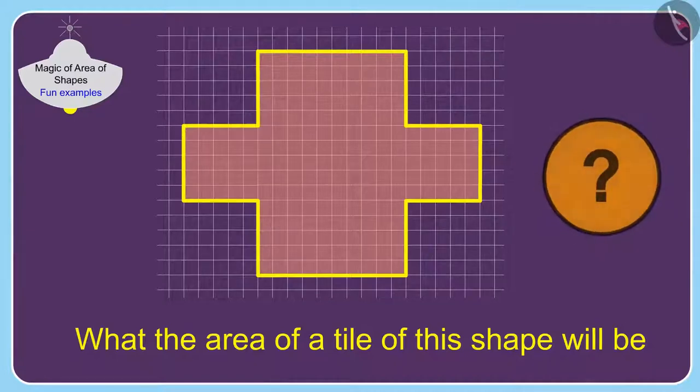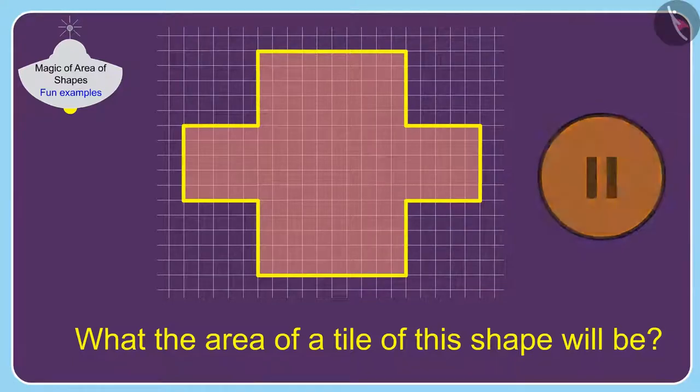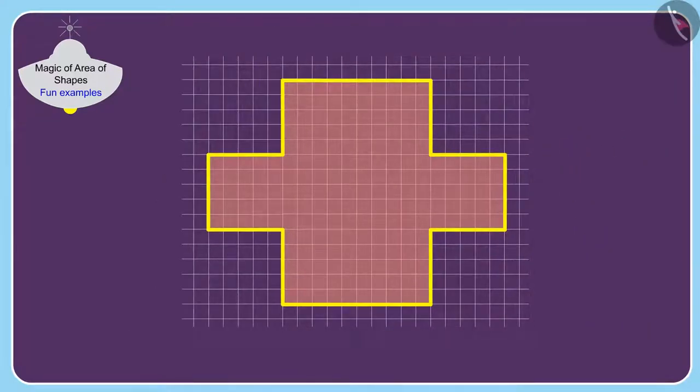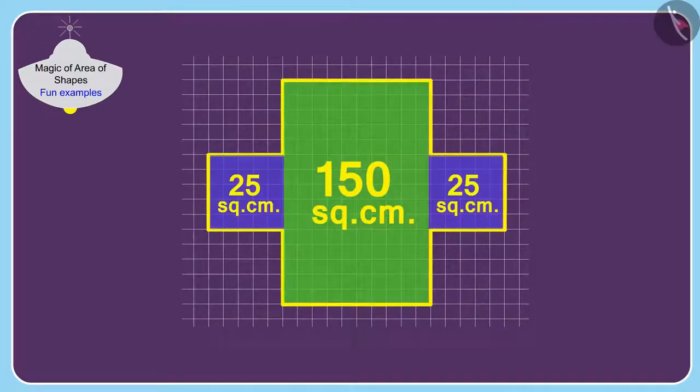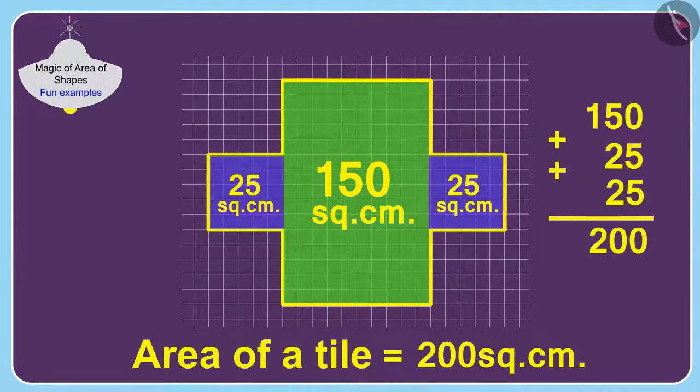You can stop the video and calculate the answer. To find the area of this tile, we can divide this shape into squares and rectangles in this way. In this way, the area of this tile is 200 square centimeters.